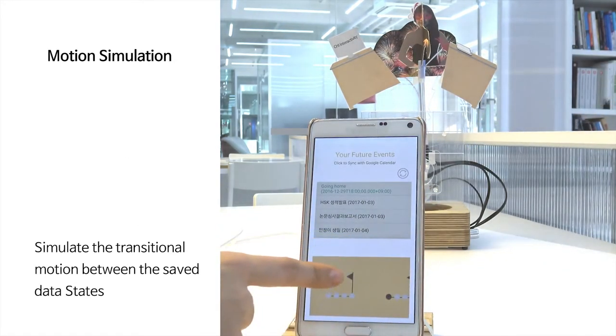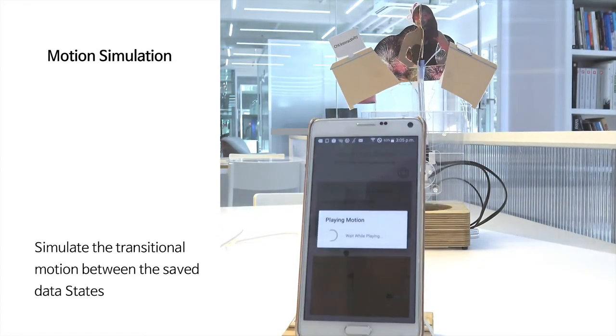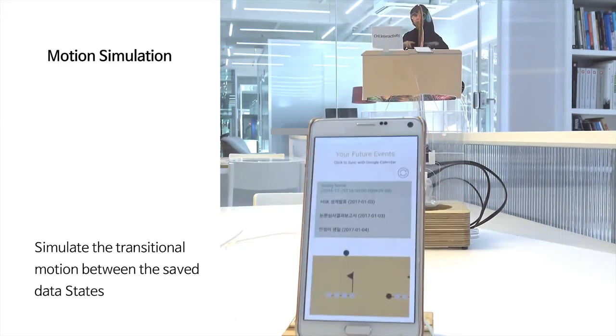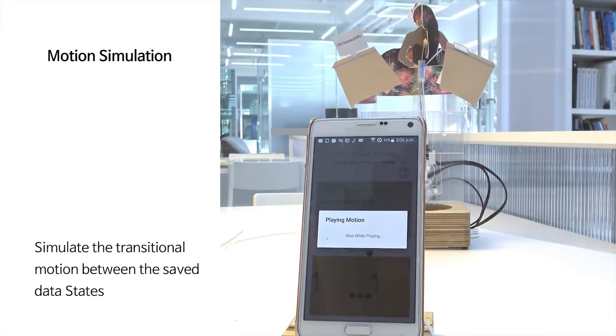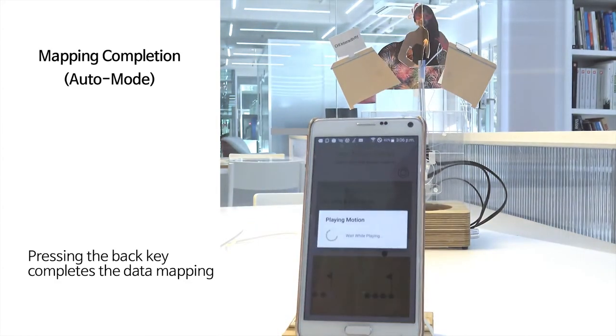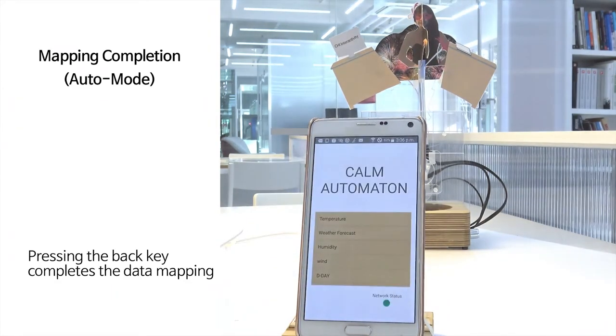By clicking the icon of the saved data, you can simulate the movement within the different data states. Pressing the back key turns the automaton into auto mode and you are ready to use the personalized ambient display.